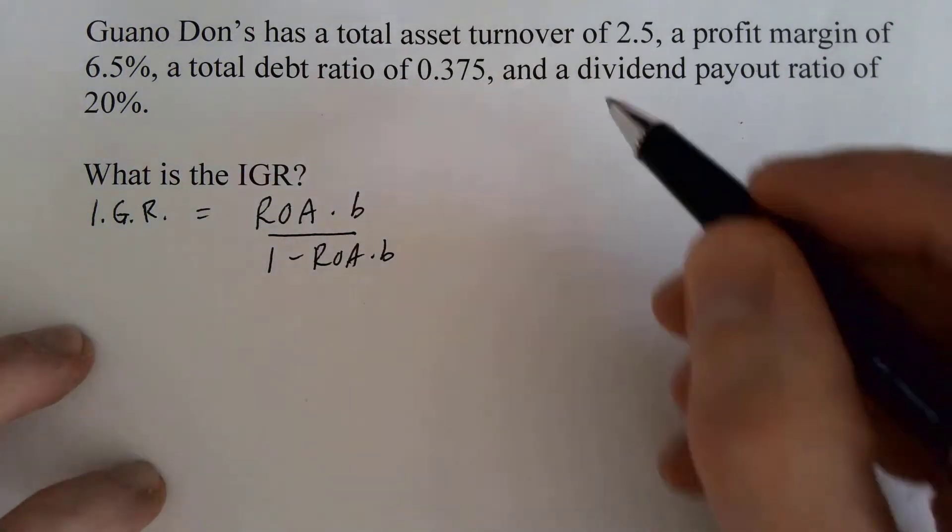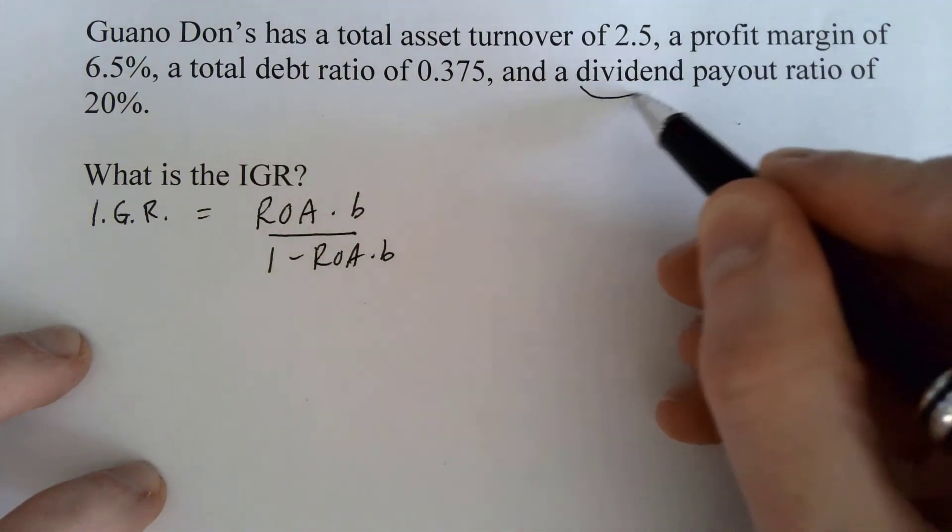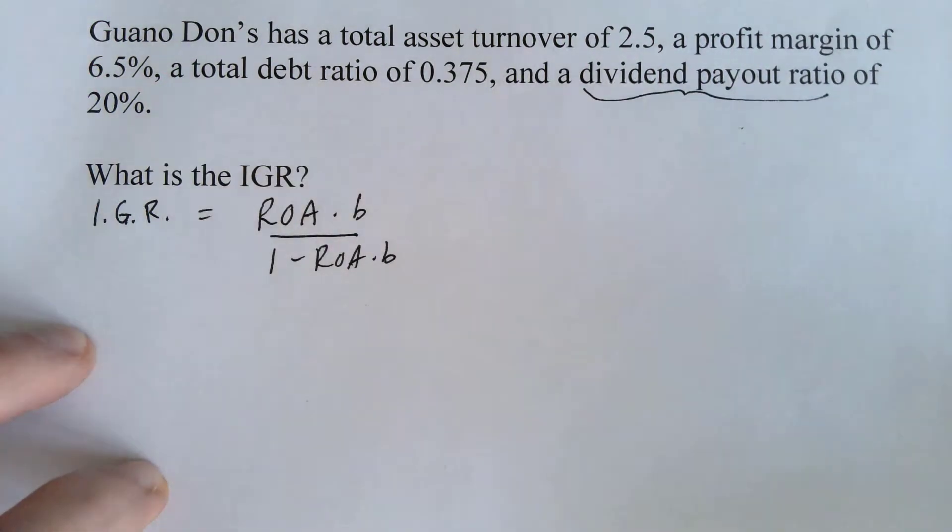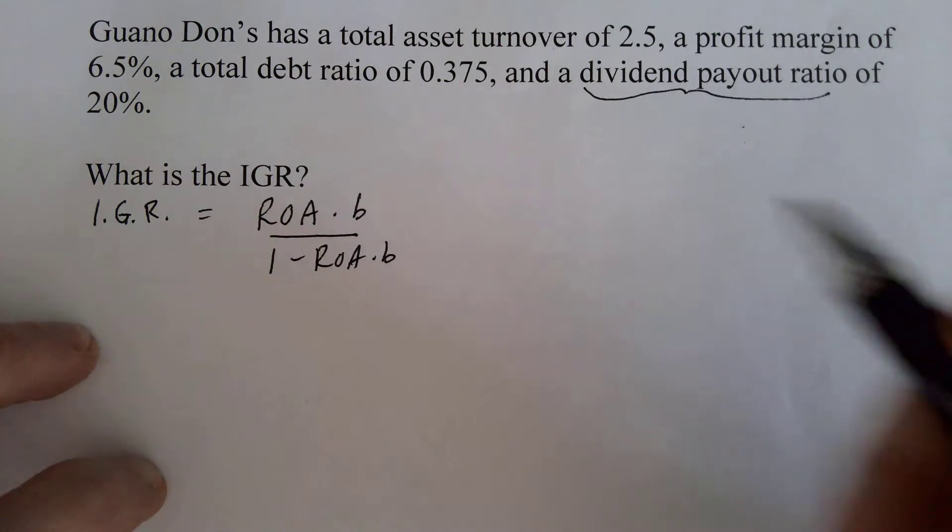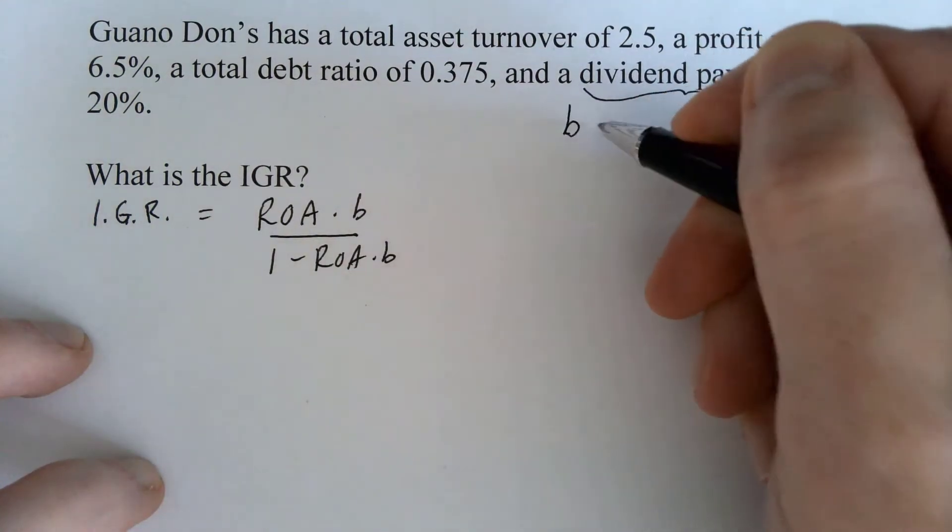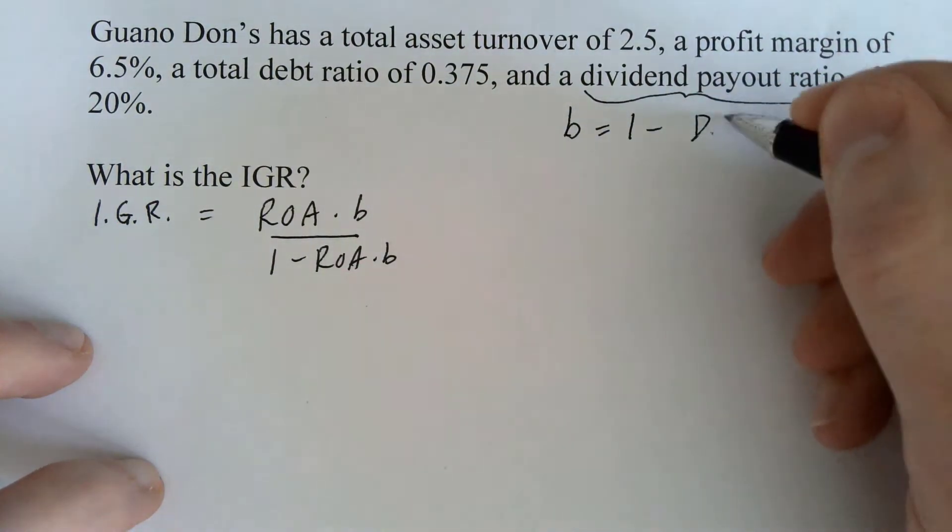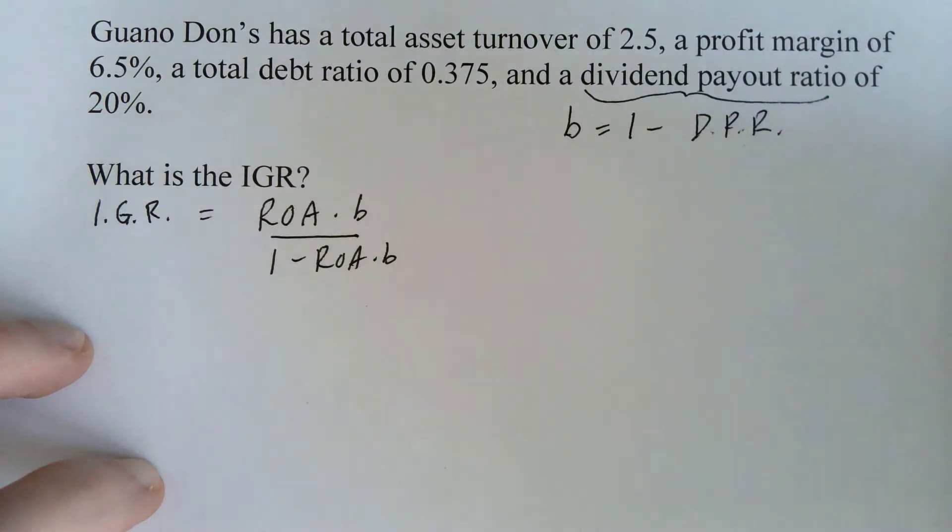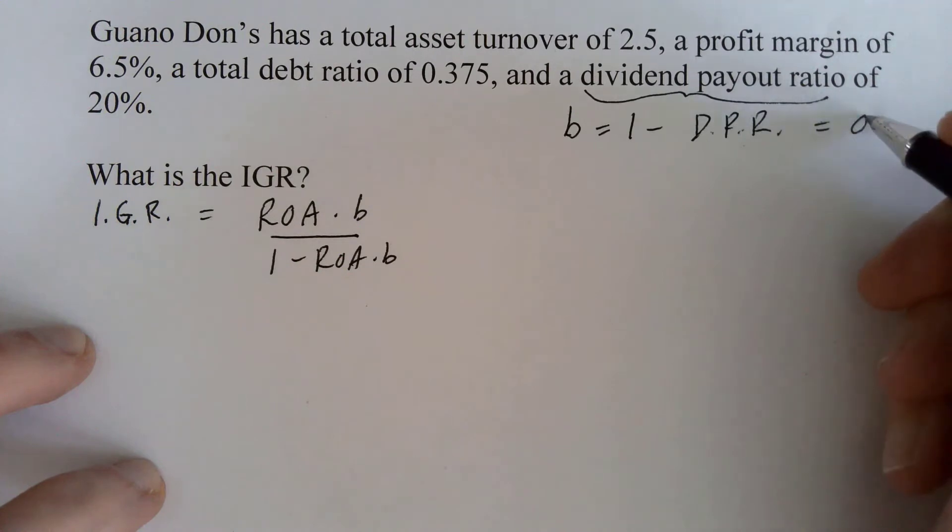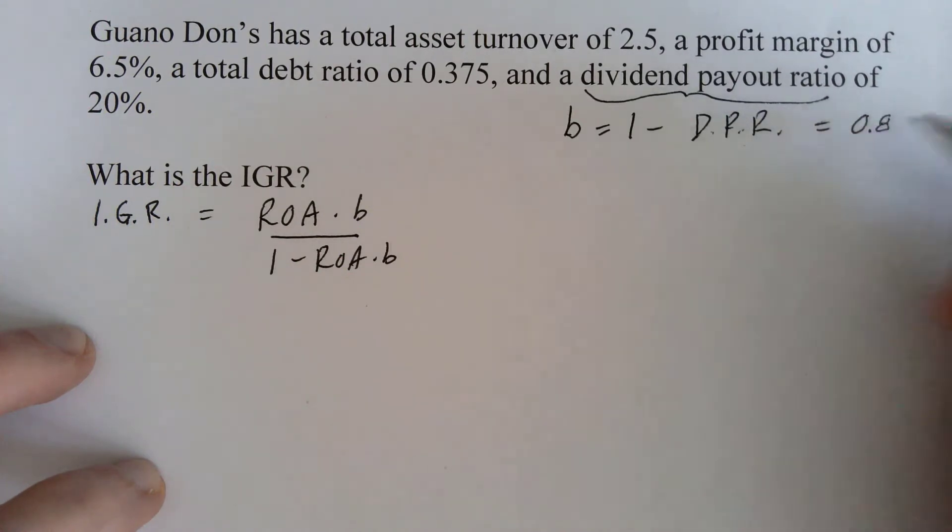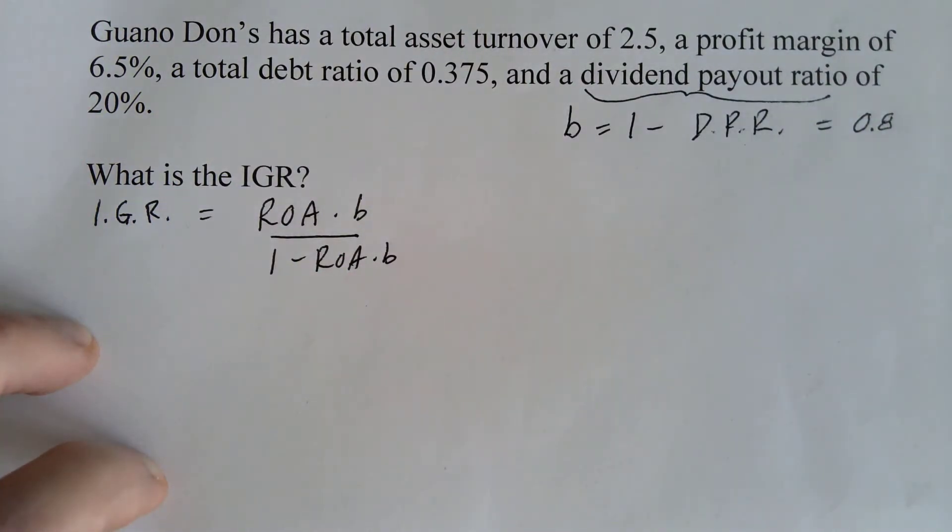Well, first of all, we are not given B. We are given the dividend payout ratio of 20%. And here's what you need to know. B is equal to one minus that dividend payout ratio. And so in this case, B is going to be 0.8. So we already have B.